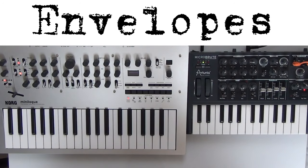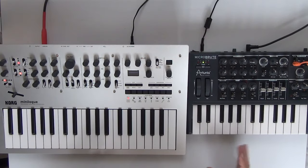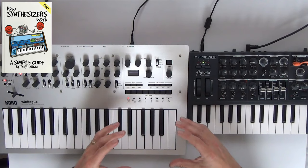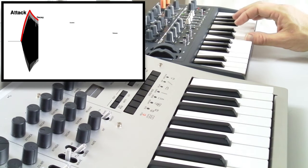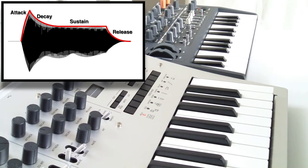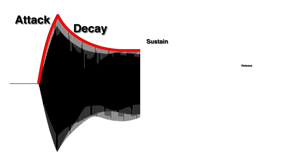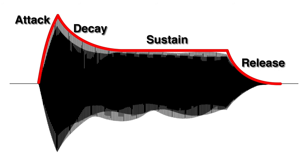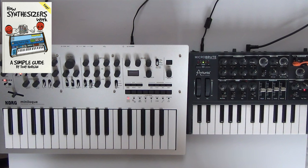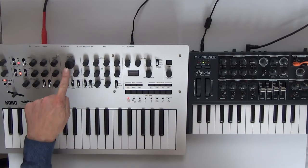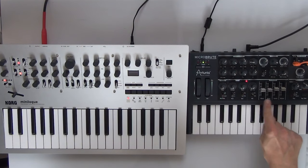The envelope section of a synthesizer is used in the first instance to control the volume of notes — how the note fades in, the volume that the note is sustained at, and how it fades out. The amplitude envelope can also sometimes be routed to control other parts of the synthesizer, so that perhaps the filter tracks the same slopes as the envelope.